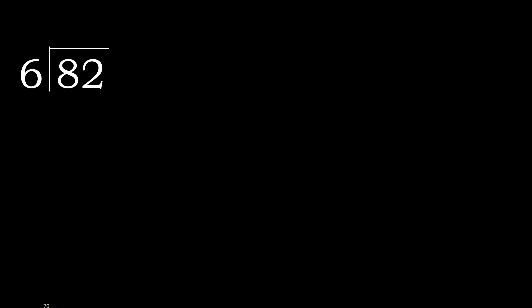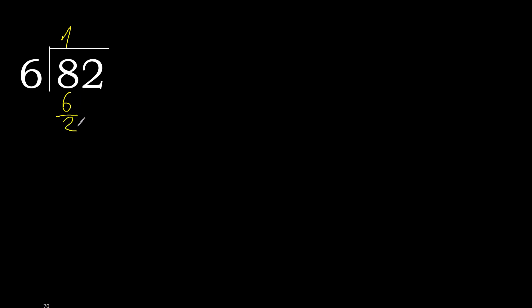82 divided by 6. 8 is not less, so we work with 8. 6 multiplied by which number is nearest to 8 but not greater? 6 multiplied by 2 is 12 — that is greater. 6 multiplied by 1 is 6 — 6 is not greater. So 1 times 6 is 6; subtract, remainder 2.